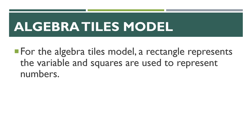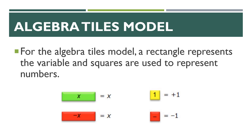For the last model, we're looking at the algebra tiles model. This is something that your school would provide — they're cheaper than base-10 blocks, so most schools have access to them. They come in little packets. For the algebra tiles model, a rectangle represents the variable and squares are used to represent numbers. In my example, I'm going to use a green rectangle to represent a positive X and a red rectangle to represent a negative X. A yellow square represents a positive one and a red square represents a negative one.